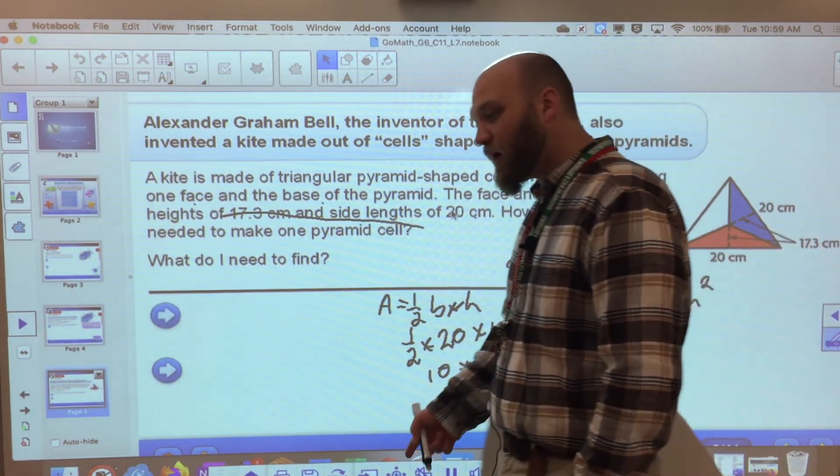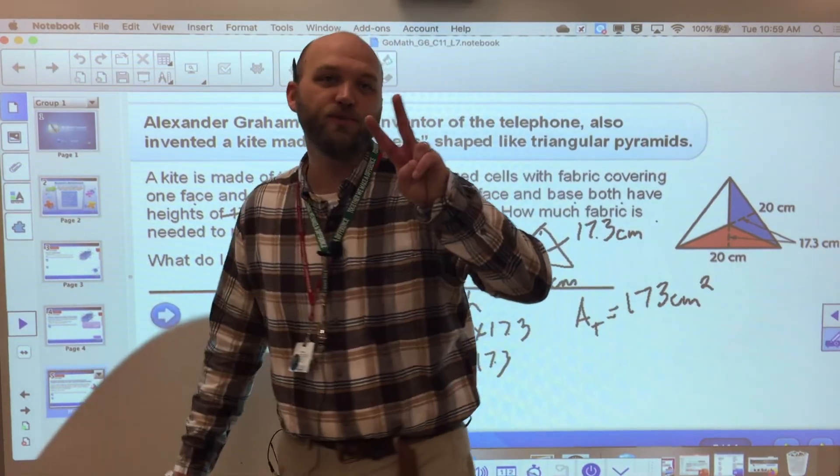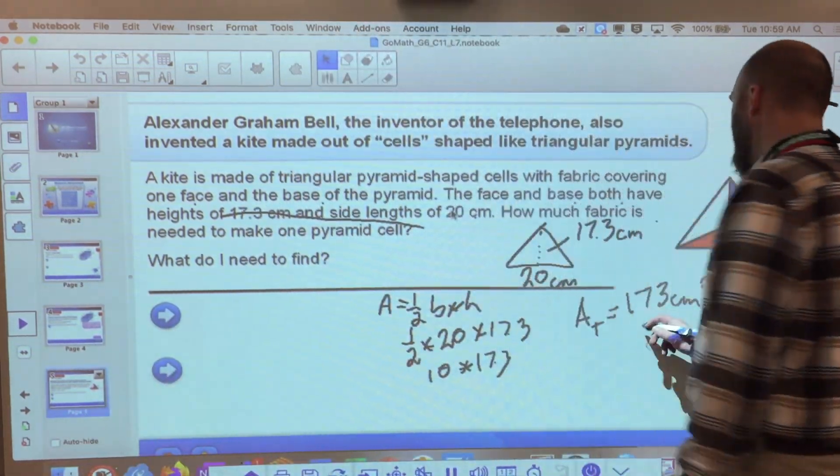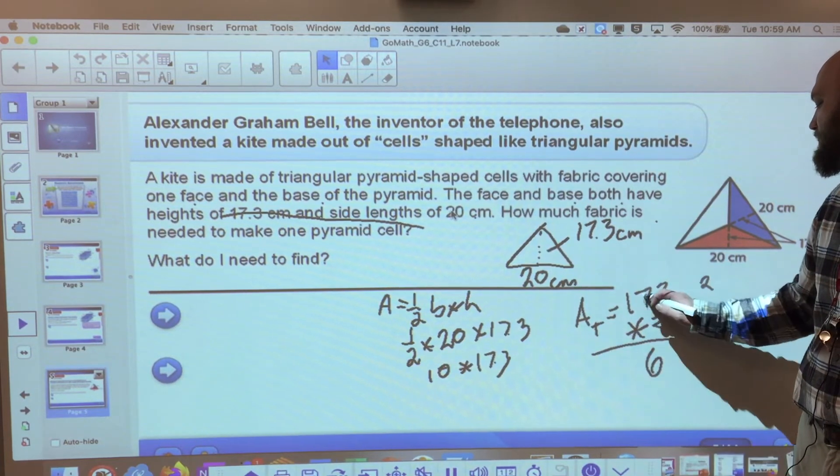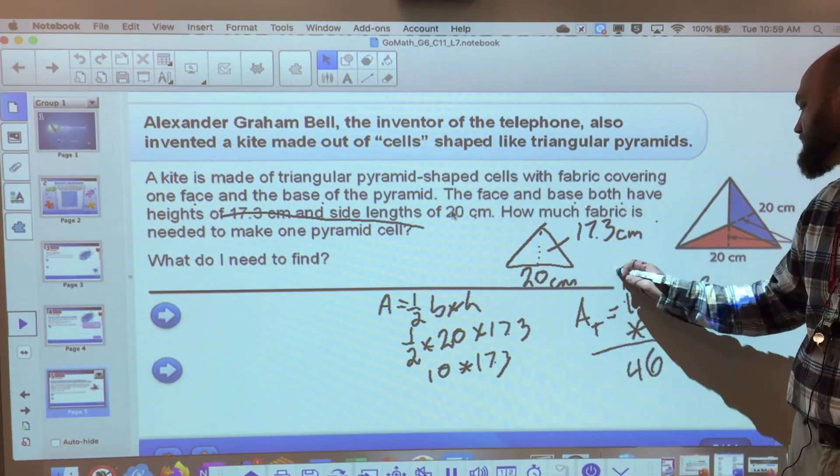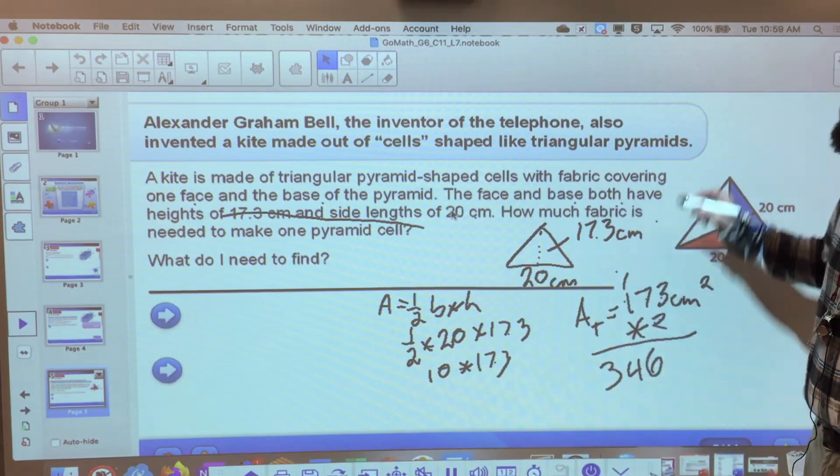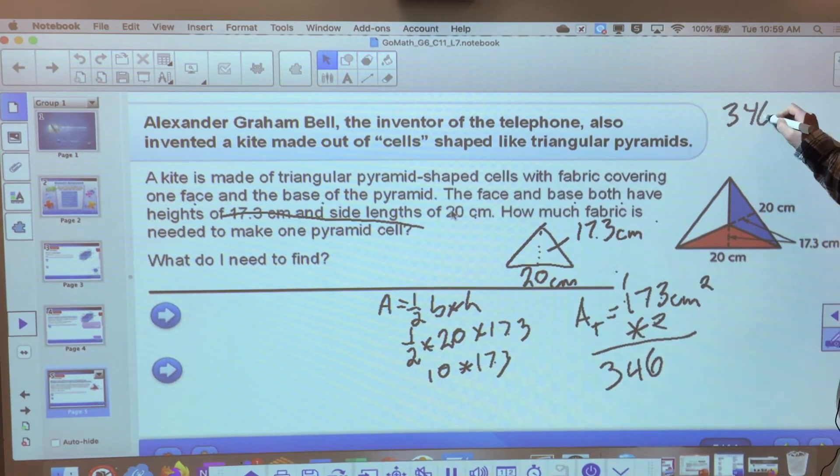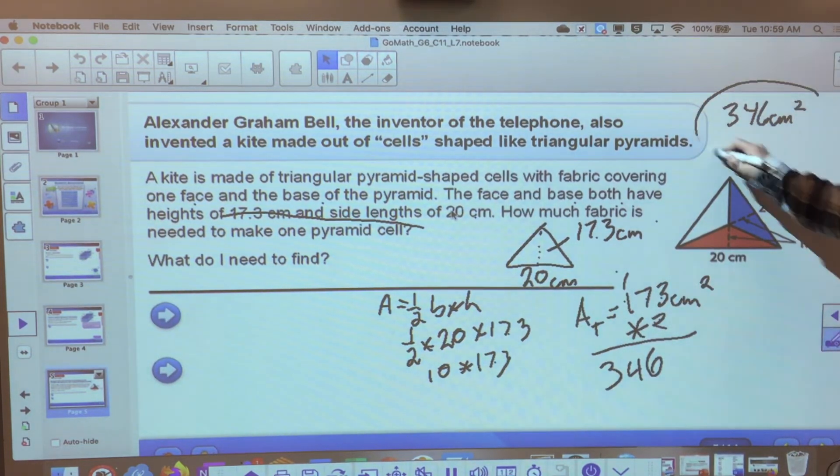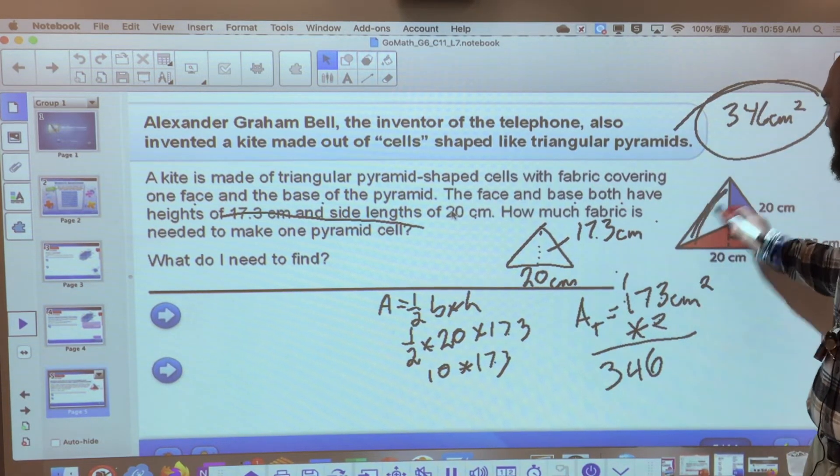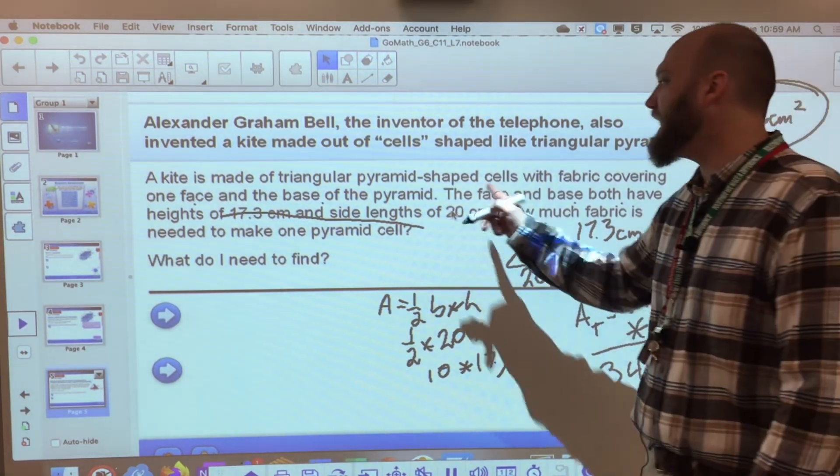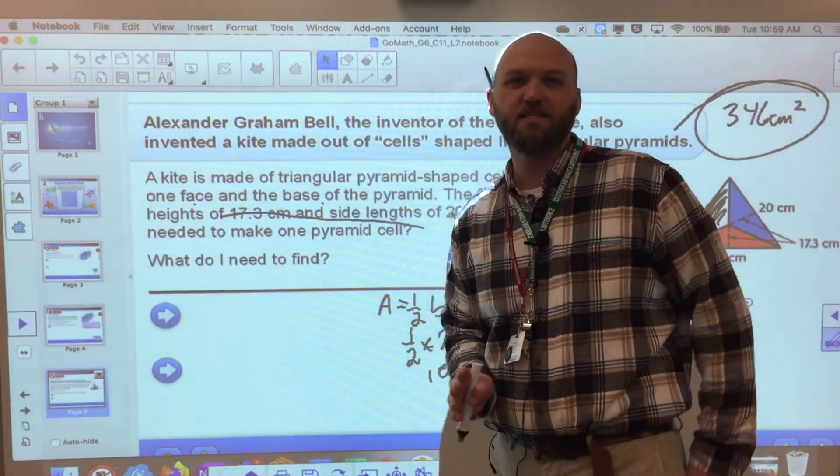But I don't have one triangle. I have two. So I multiply that by two. Two times three is six. Two times seven is 14. Two times one is two. Plus one is three. So my answer is 346 centimeters squared. 346 centimeters squared. This plus this. Not this one, because I only have a base and one base.